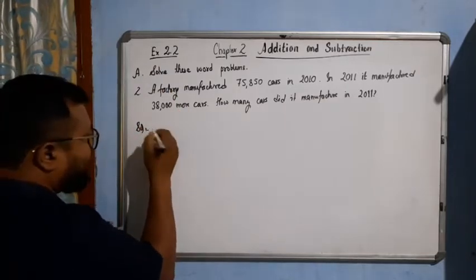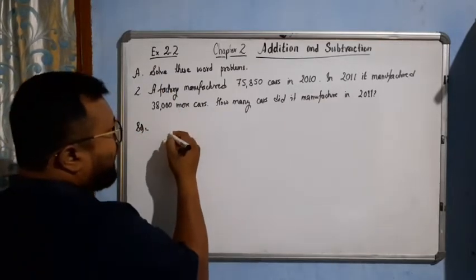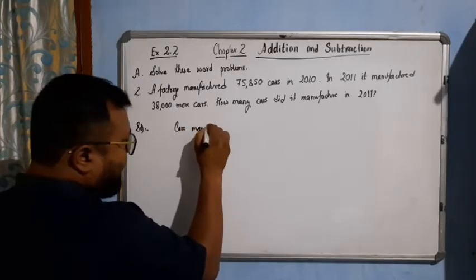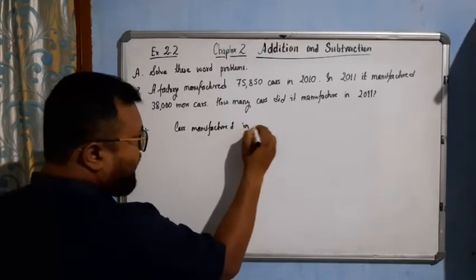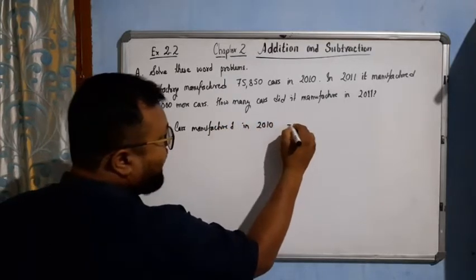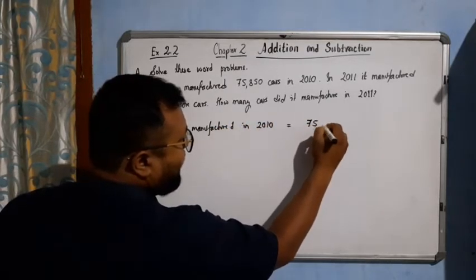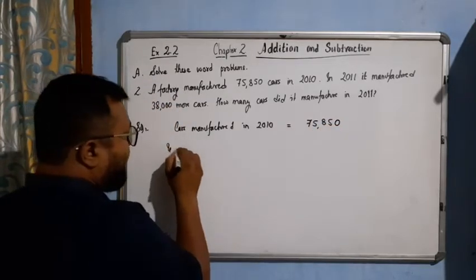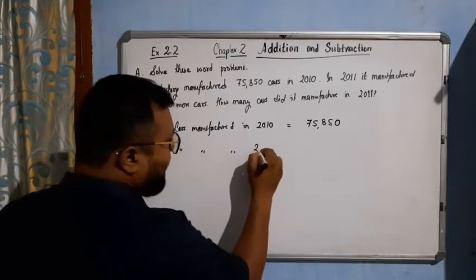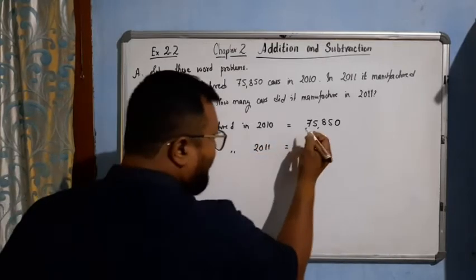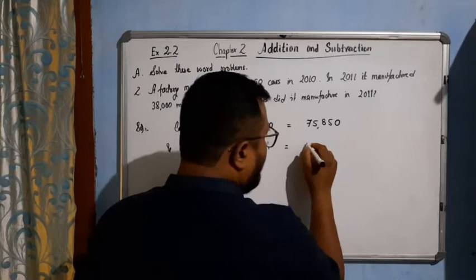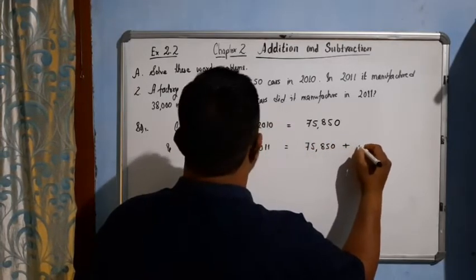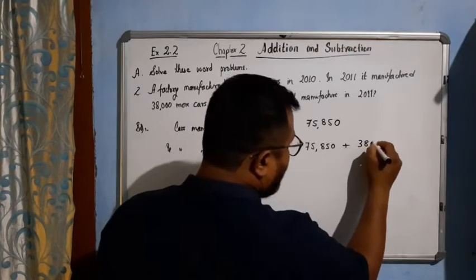See how we will do this one. Solution: Cars manufactured in 2010, simply 75,850. And cars manufactured in 2011 will be 75,850 plus 38,000.